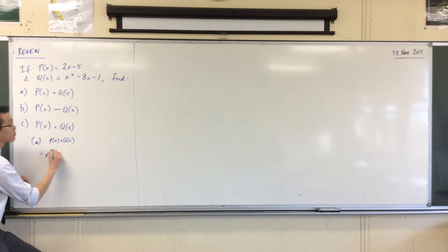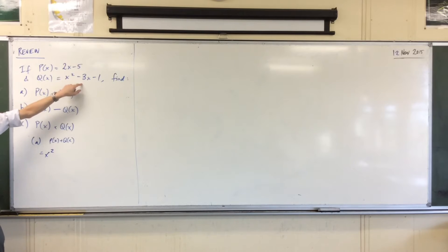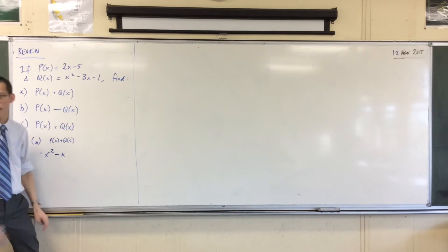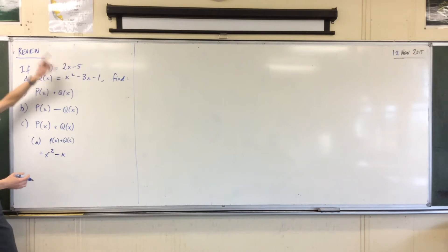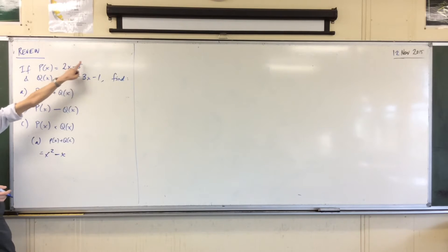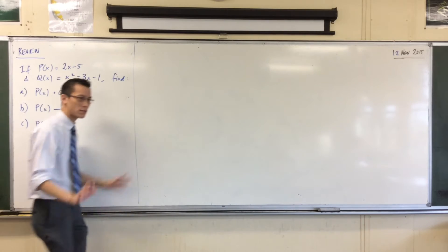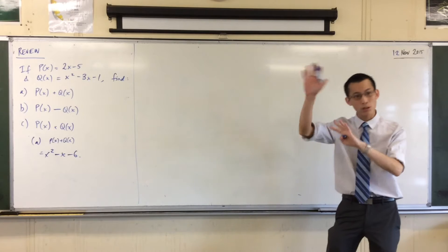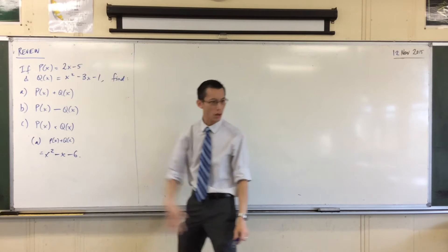I've got the X squared there. How many X terms do I have? Remember, I'm adding these things together. I've got 2X there and I've got minus 3X there, so 2 take away 3 is negative 1 — I'm going to have minus X. Just watch out for your signs there; it's a bit sneaky. We're used to subtracting terms, but not so much used to subtracting entire expressions. I've done the X's, and now the constant term: minus 5, minus 1, is minus 6. Just make sure you're pairing up the relative terms, thinking about those coefficients, and then off you go.